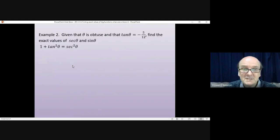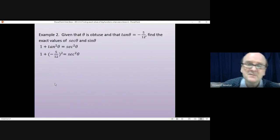Well, there is one. 1 plus tan squared theta is equal to sec squared theta. So we could substitute tan theta into here. And that'll give us 1 plus minus 5 over 12 squared is equal to sec squared theta. We can tidy all of this up on the left-hand side. And we'll get 169 over 144.